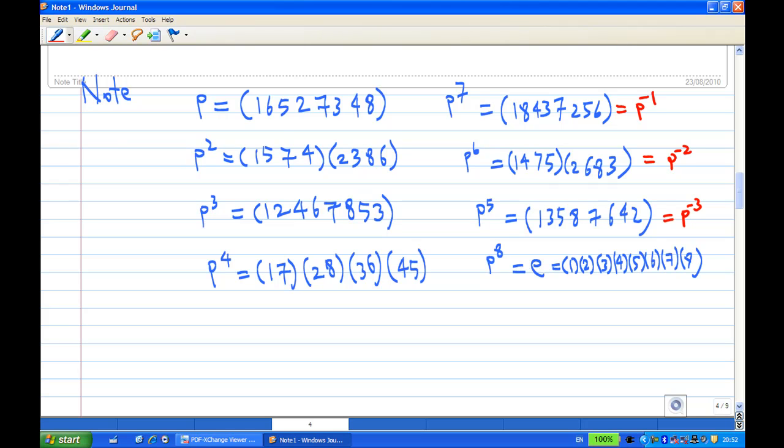Now P⁷ happens to be P⁻¹ because P times P⁷ is E. So the inverse of P is P⁷, which we can write as (1 8 4 3 7 2 5 6).